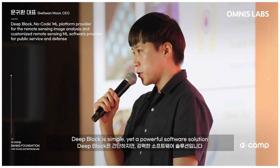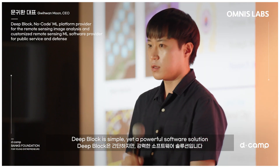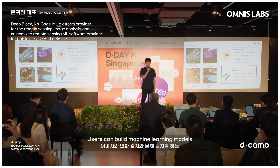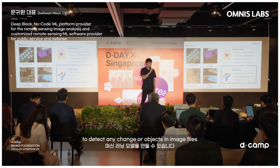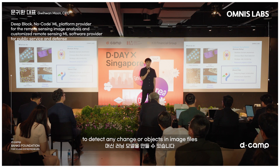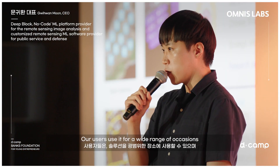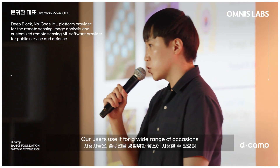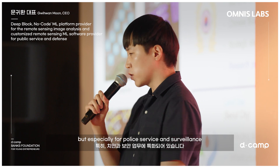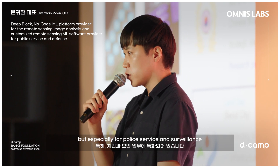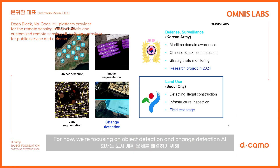DeepBlock is a simple yet powerful software solution. Users can build machine learning models to detect any change or objects in image files. Our users use it for a wide range of applications, but especially for public service and surveillance. For now, we are focusing on object detection and change detection AI for remote sensing images to solve problems in urban planning.